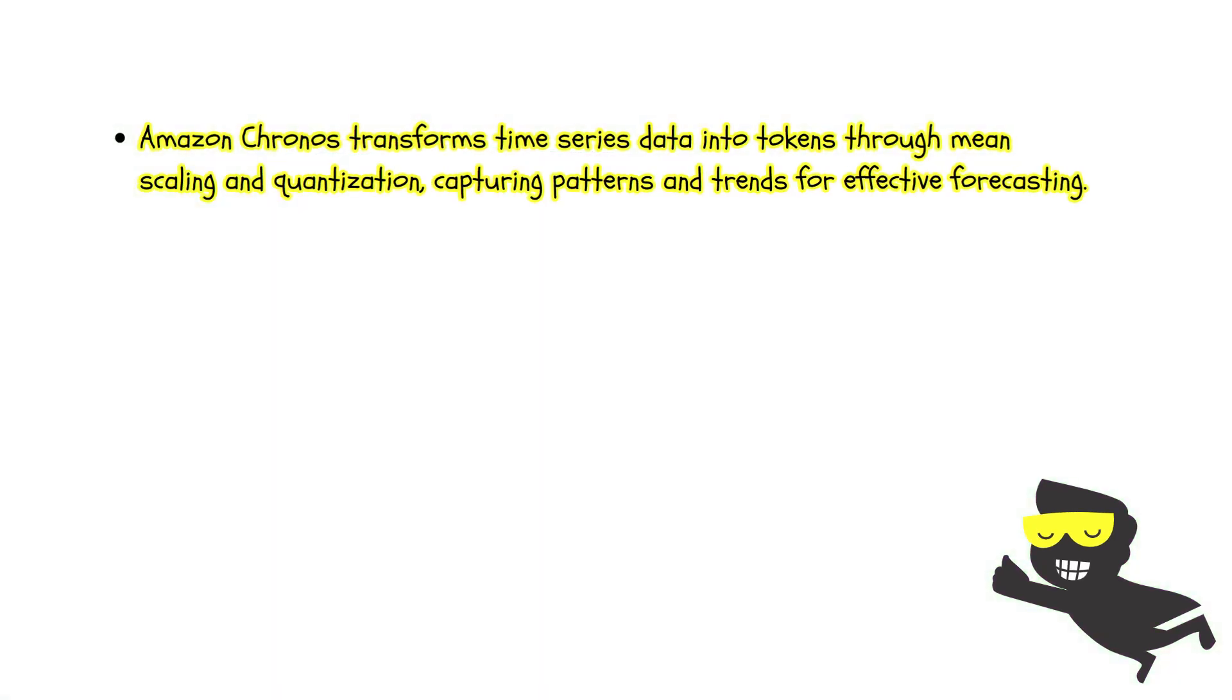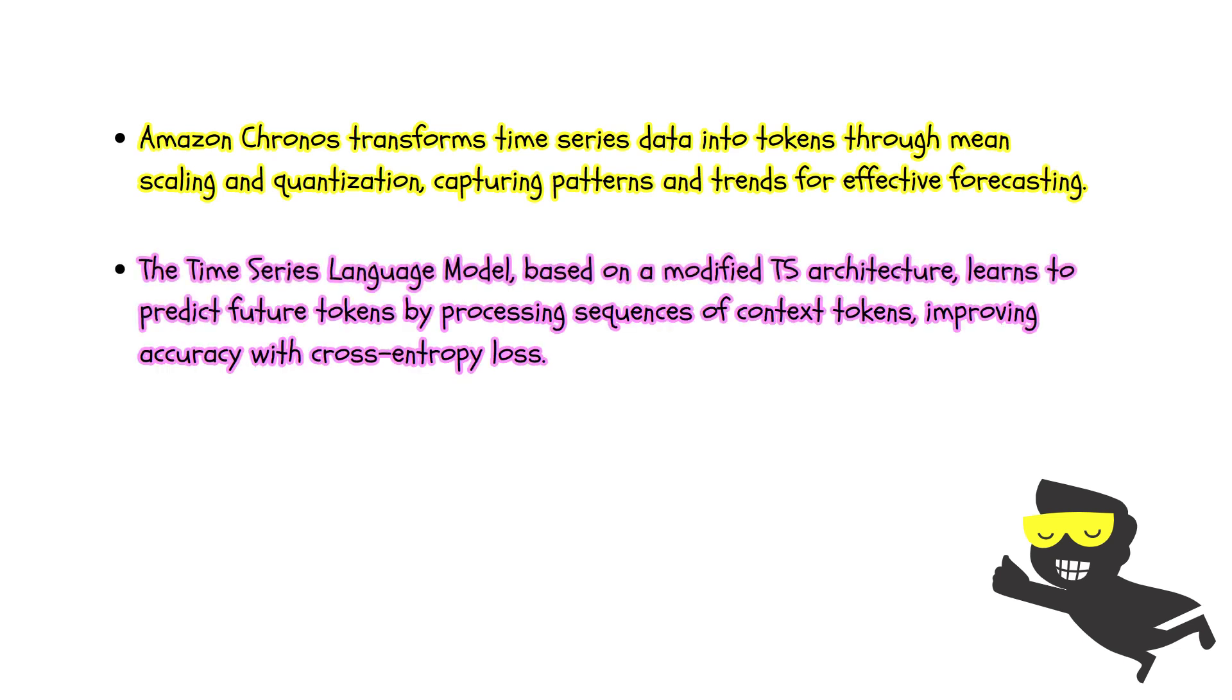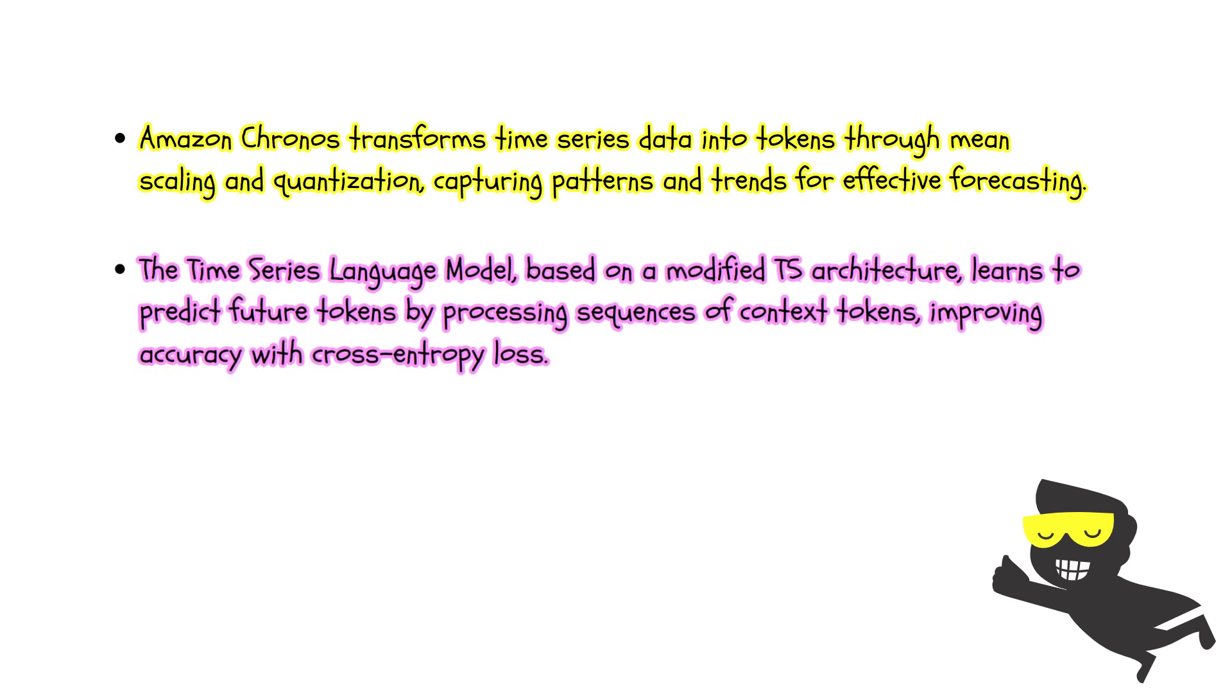To sum it up, Amazon Chronos utilizes a process to handle time series forecasting by leveraging LLMs. The initial step is tokenization, where continuous time series data is transformed into discrete tokens through mean scaling and quantization. This allows the data to be converted into a format suitable for LLM. Each token represents a quantized range of the normalized time series data.